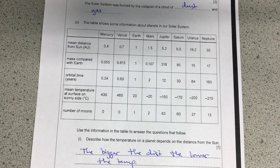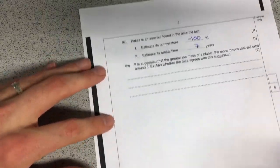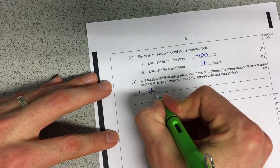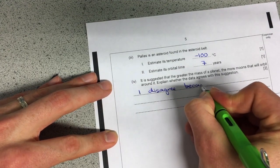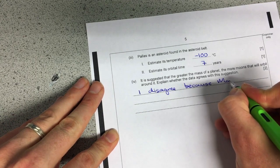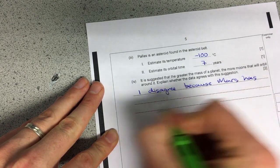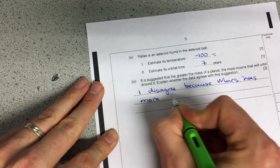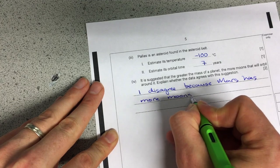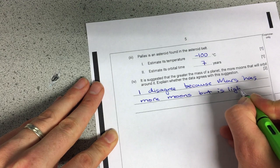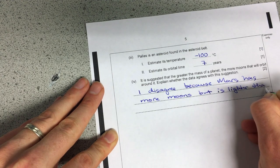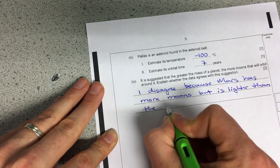We need to use either of those examples in our answer. So we could say I disagree or we start with that because Mars has more moons but is lighter than the Earth.